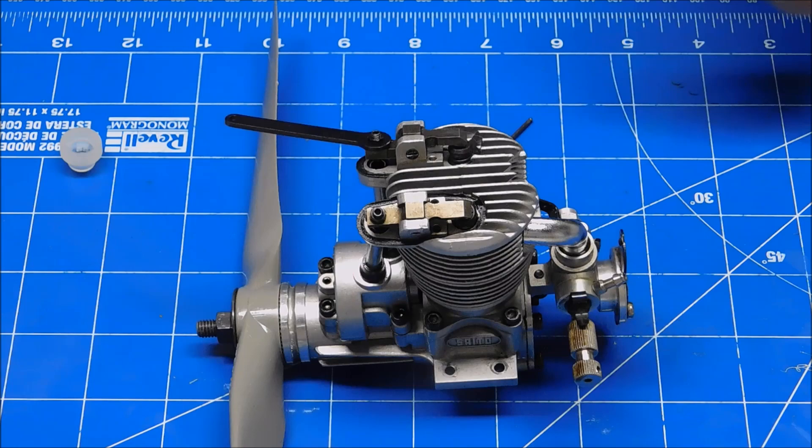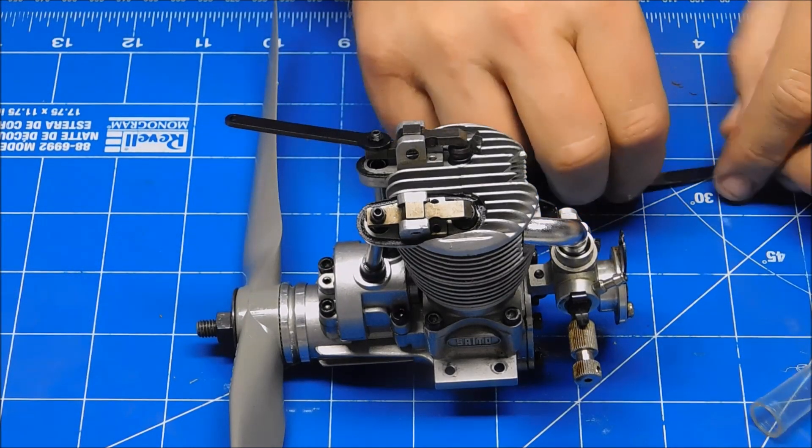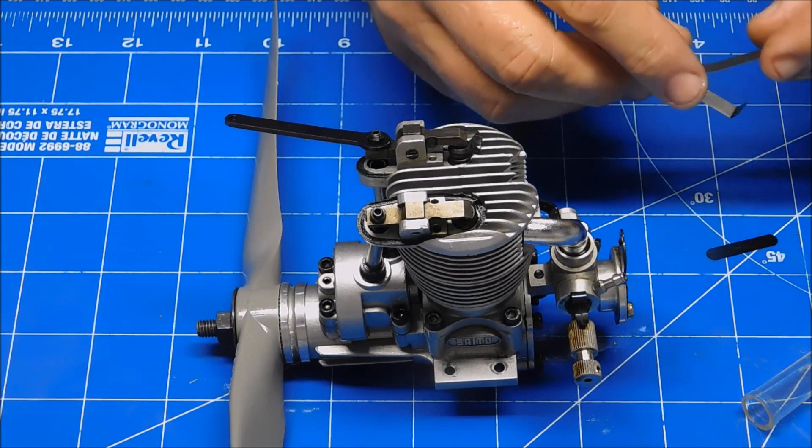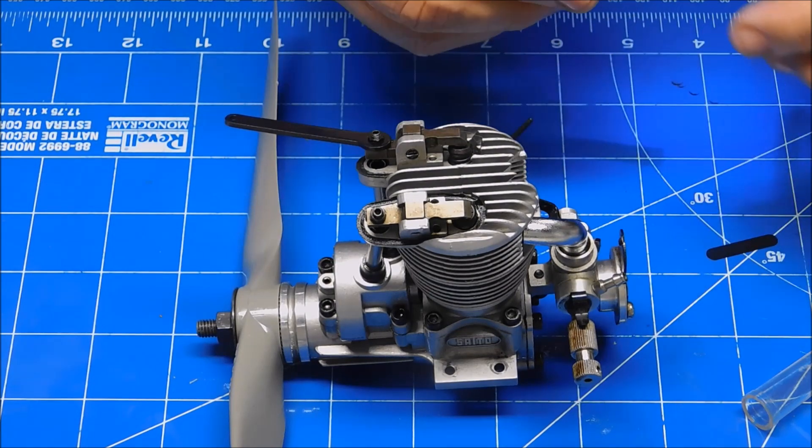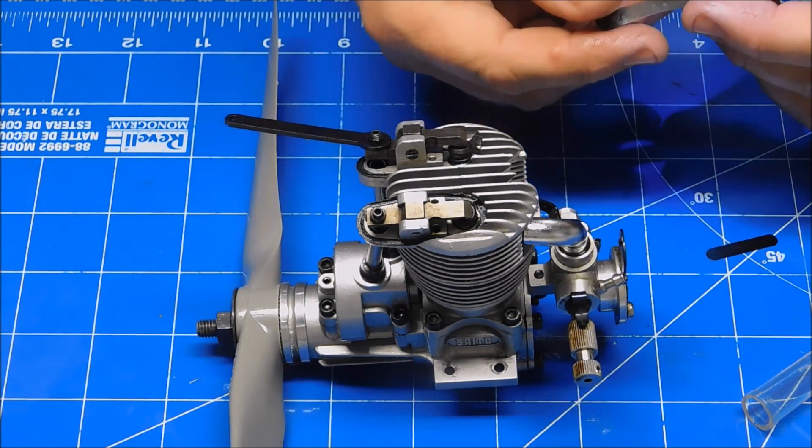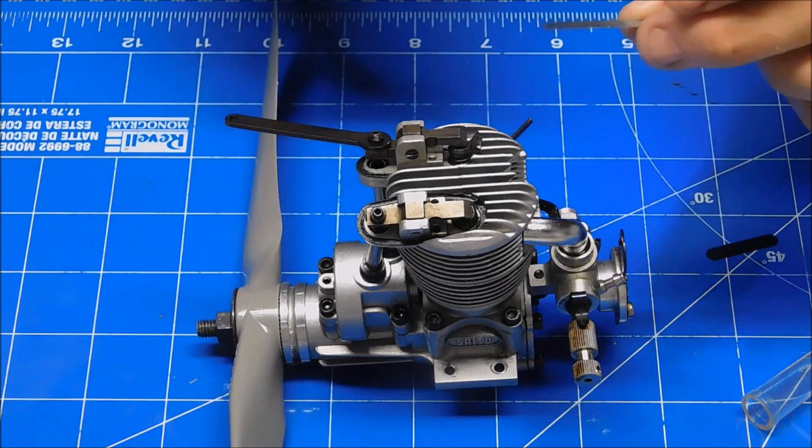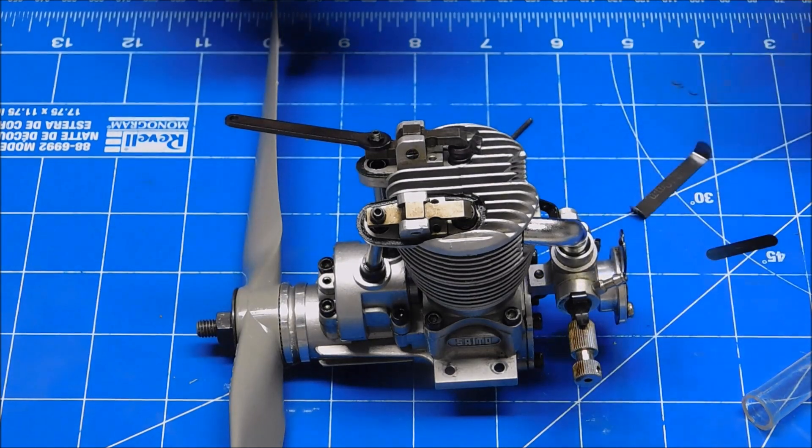So when I set the timing on my engines, I've got numerous sets of little feeler gauges, but I like to use this set that came with an old OS engine because it comes with two. One I think is a .01 or .04, I can't really read it anymore. And that's what I use to set my valve with. And then one's a .1 millimeter that I use as my no-go gauge.